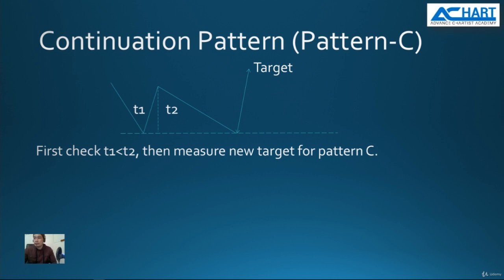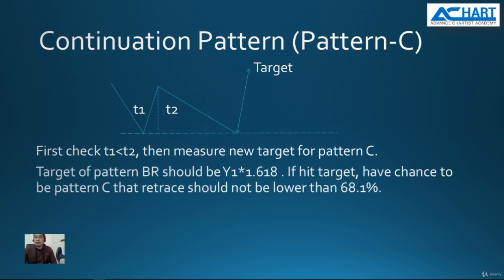For pattern C, the new target of the bottom reversal pattern — the new line — should actually be at least y1 times 1.618. What we mean by that is we consider this as our y1. So y2, the new target, must be at least 1.618 of y1.